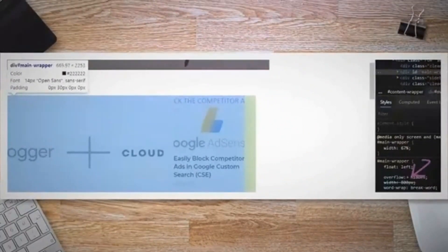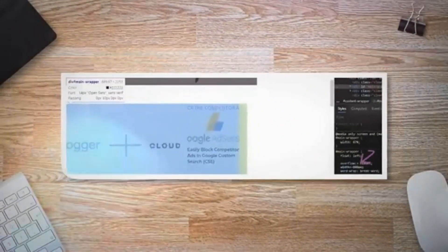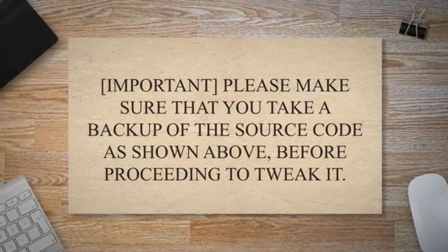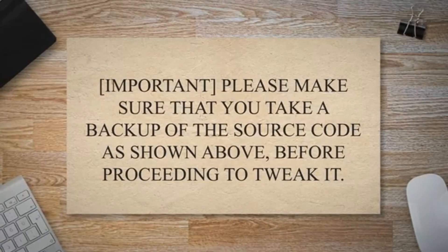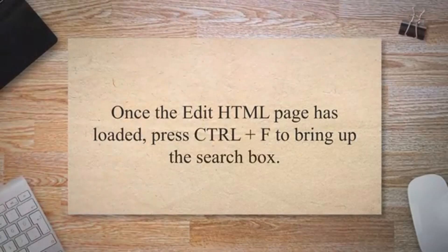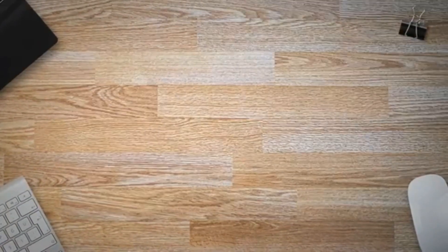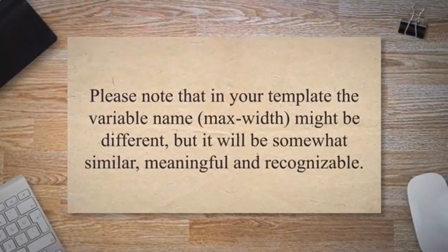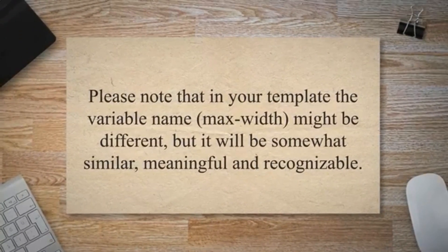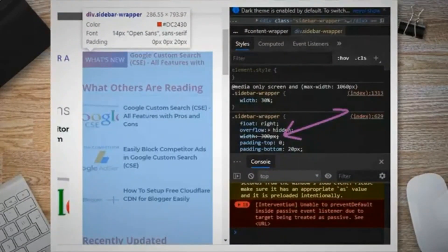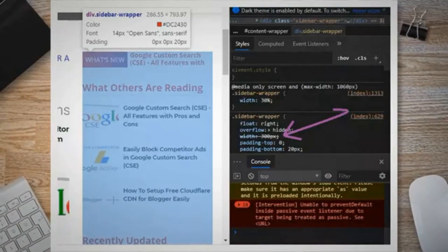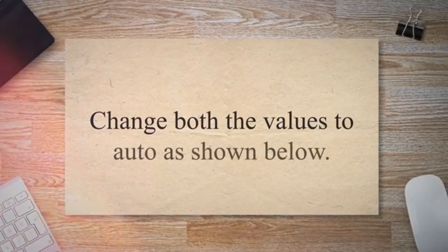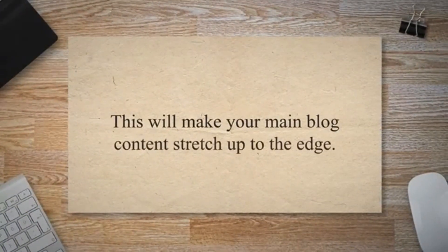Go to blogger.com, click on Theme from the left bar, then click on Edit HTML. Please make sure you take a backup of the source code before proceeding. Once the Edit HTML page has loaded, press Ctrl+F to bring up the search box. Search for the #OuterWrapper max-width value — in my case it is 1200 — that you just inspected. Please note that in your template the variable name MaxWidth might be different, but it will be somewhat similar, meaningful, and recognizable. You'll have to make two changes: in #OuterWrapper there are two widths defined — MaxWidth and Width. Change both values to Auto. This will make your main blog content stretch up to the edge.